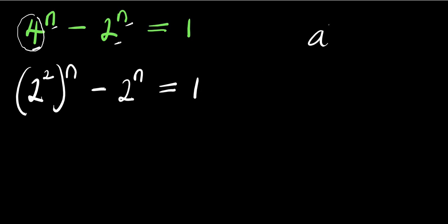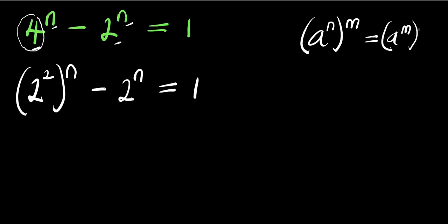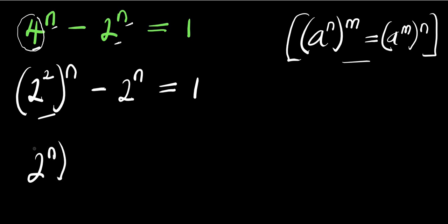Using the exponent identity — if you have a power raised to another power — we get (2^n)² minus 2^n equals 1.